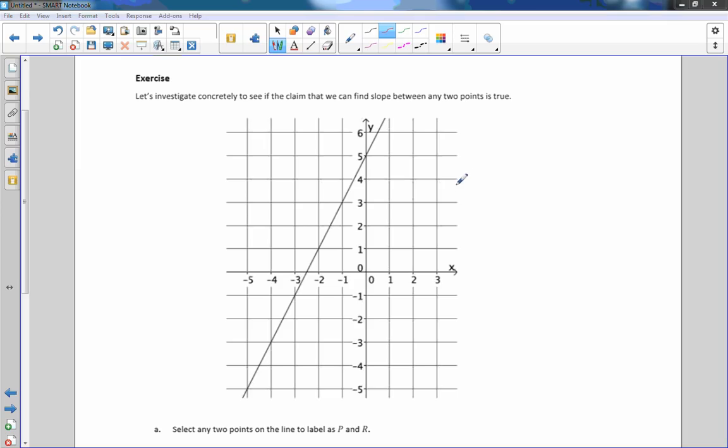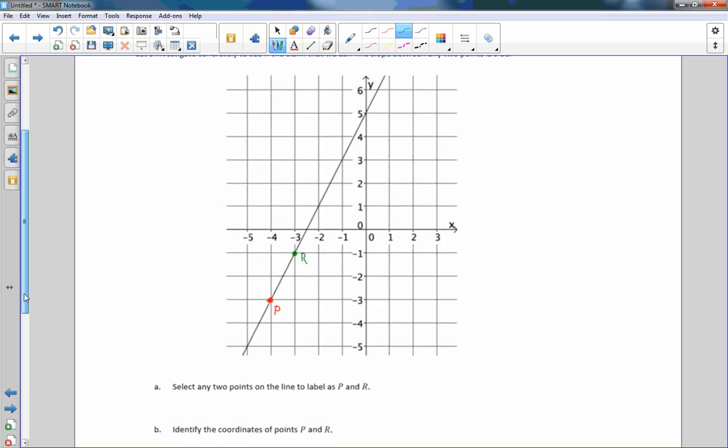In this first exercise, it says let's investigate concretely to see if the claim that we can find slope between any two points is true. So part A says to select any two points on the line to label as P and R. So obviously, I'm going to try to make this easier by not picking values that are not integers. So I'm going to choose this point right here and I'll call it P. And I will choose the next integer value right here as R.